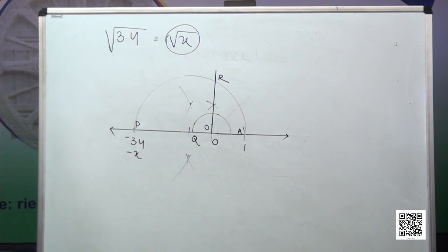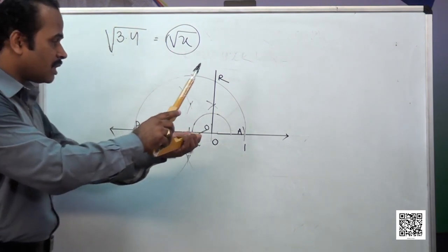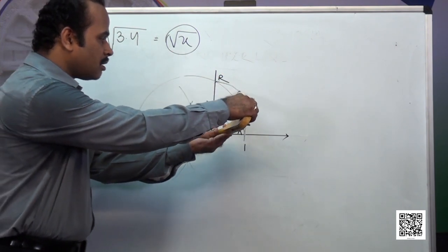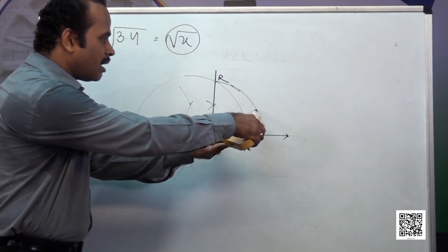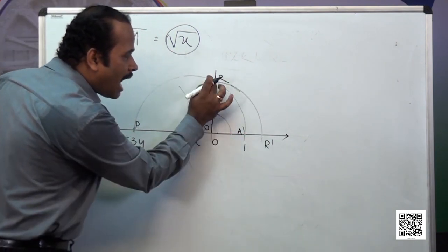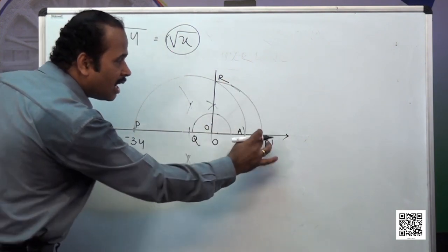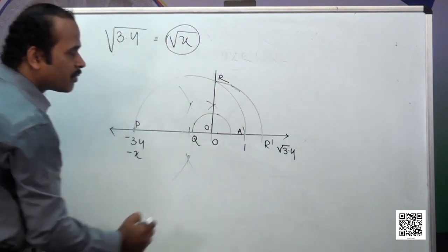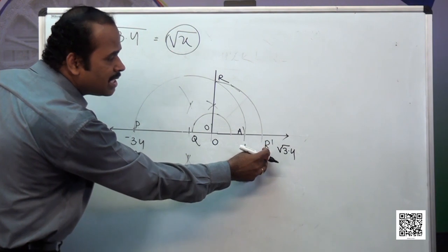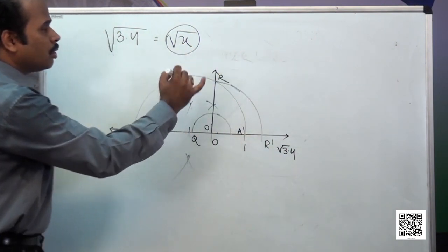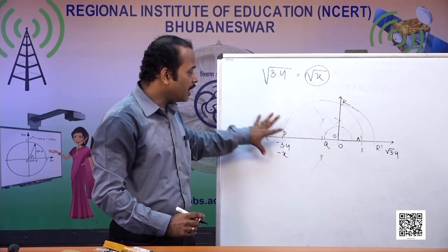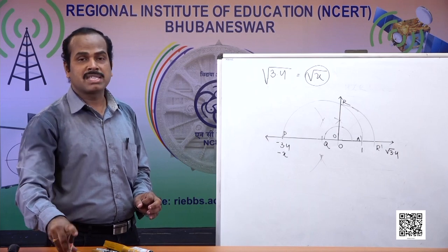To bring OR onto the number line, I select O as center and OR as radius, then draw an arc. The point where it cuts the number line is R dash. Now OR and OR dash are equal because I selected O as center. R dash represents the square root of 3.4 on the number line. This is the number line where 0 is here, 1 is here, and minus 3.4 is this point. R dash is the square root of 3.4. In this way, we can represent any decimal number in irrational form on this number line.